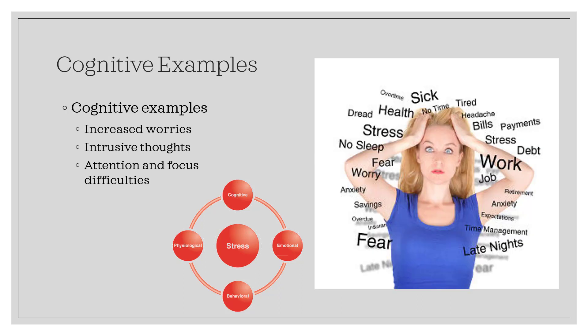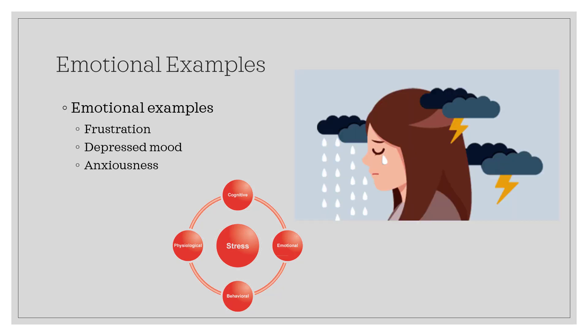Cognitive examples of stress include increased worries, intrusive thoughts or images, and attention and focus difficulties. Some emotional responses to stress include frustration, depressed mood, and anxiousness.